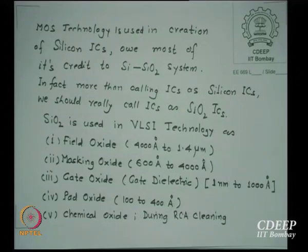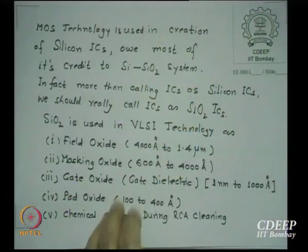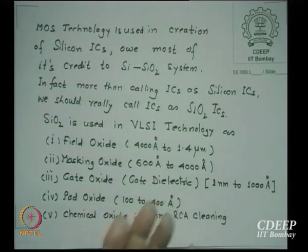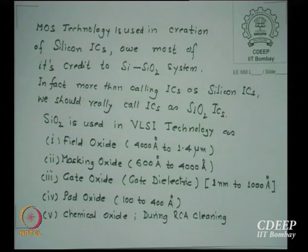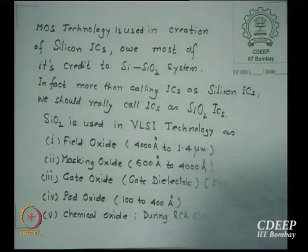These oxide thicknesses vary, and therefore many process steps may vary for different oxide types. For example, if you are doing a field oxide of 1 micron or so, the gate oxidation is very thin, so the same technique cannot be used for field oxide because the time taken would be huge. We will change the technology as needed and see how SiO2 is grown by a variety of methods.